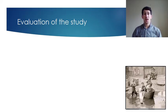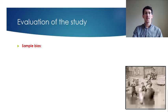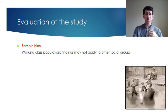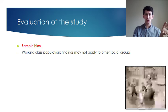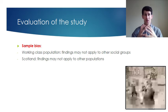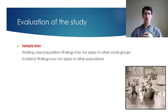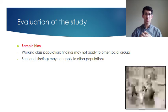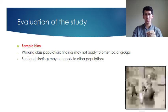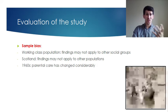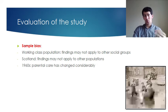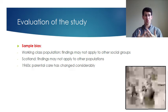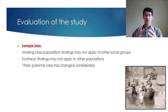There is definitely a sample bias within Schaffer and Emerson's study. Firstly, it was done on a working-class population, so findings might not apply to middle or upper class groups. In addition, it was only done in Scotland — Glasgow specifically — so we might not be able to apply findings to populations across Europe, Africa, or America. The study may also lack temporal validity, as it was conducted in the 1960s and parenting approaches have changed considerably since then, making it unlikely we'd get similar results if repeated today.